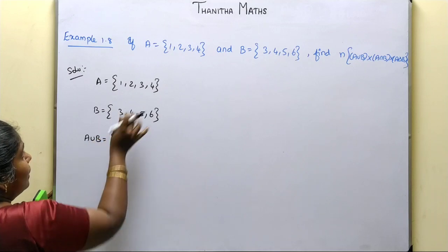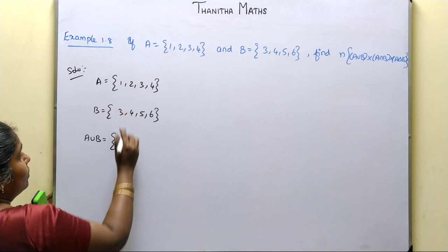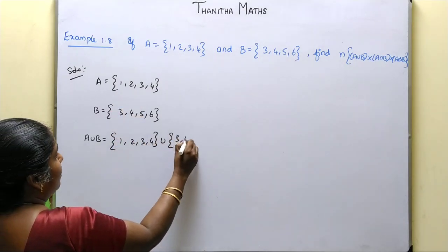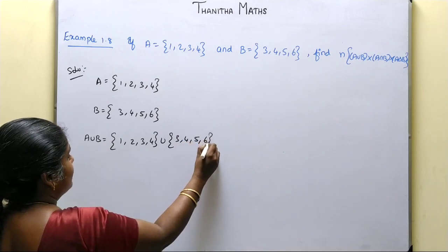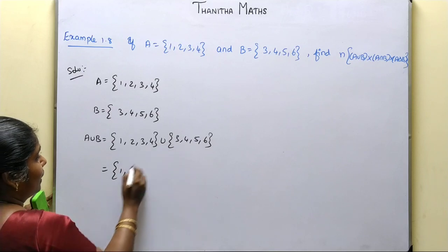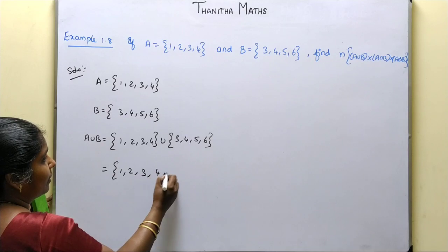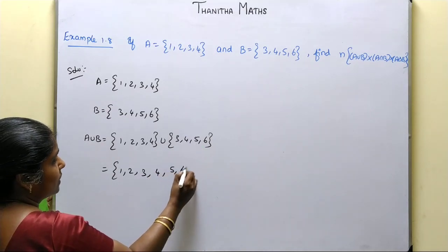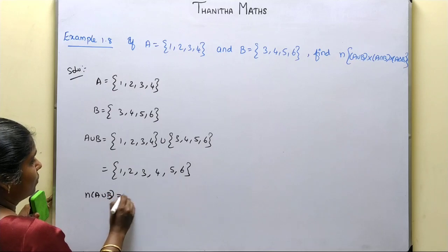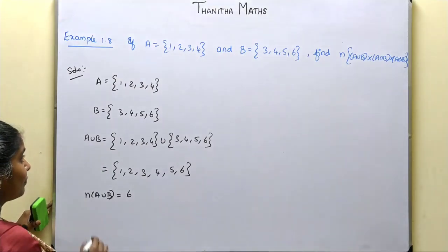A∪B: taking the union of {1, 2, 3, 4} union {3, 4, 5, 6} gives us {1, 2, 3, 4, 5, 6}. So n(A∪B) is equal to 6, the number of elements is 6.